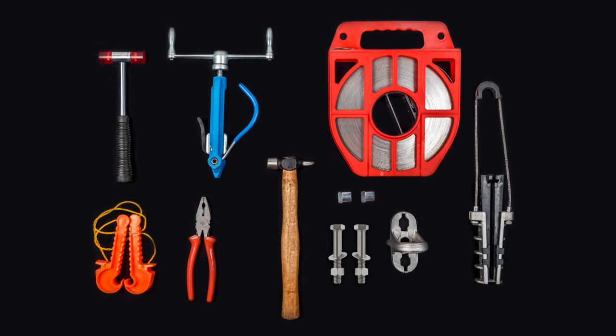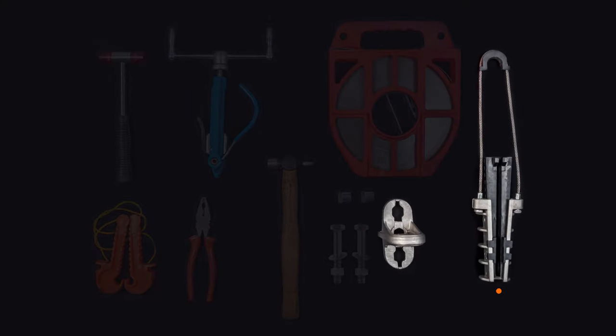The Anchoring Clamp Assembly consists of the clamp body with plastic wedges, steel bale, and bracket.